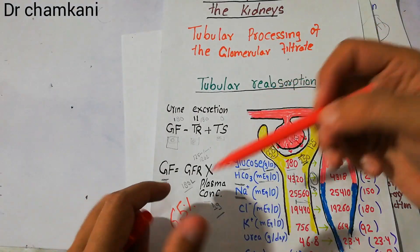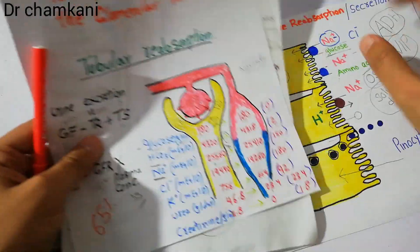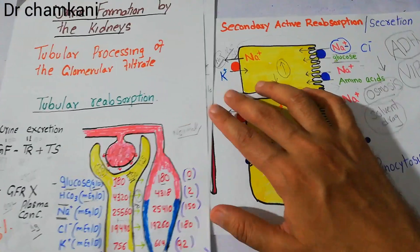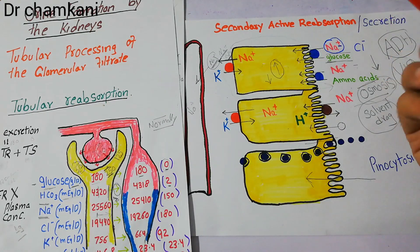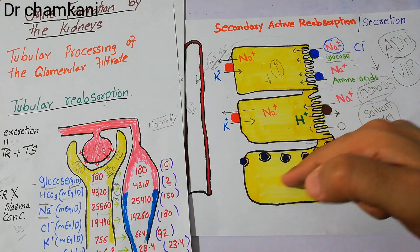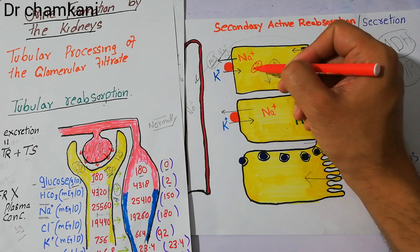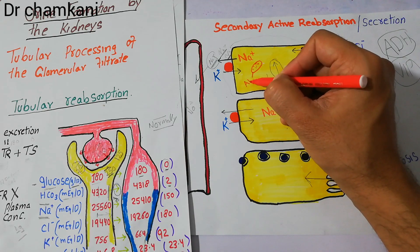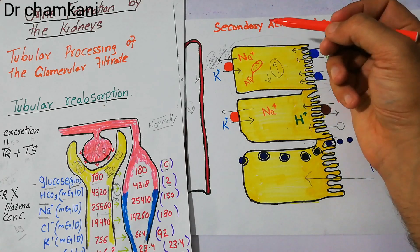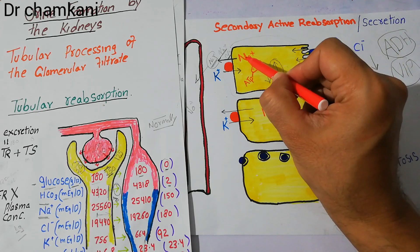What is so special about the proximal tubule? There are three important things. First of all, the mitochondria in the cells of the proximal tubule are present in large number. These cells have a lot of mitochondria, which are the powerhouse of cells and produce ATP. This ATP is utilized by the sodium-potassium pump, which generates energy used to throw sodium out and bring potassium into the cells, decreasing the concentration of sodium in the cell.